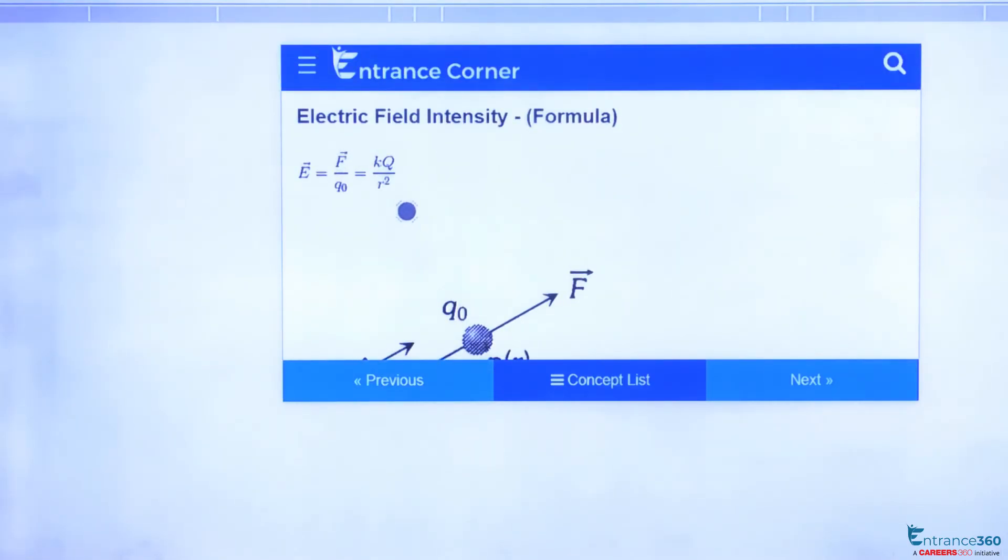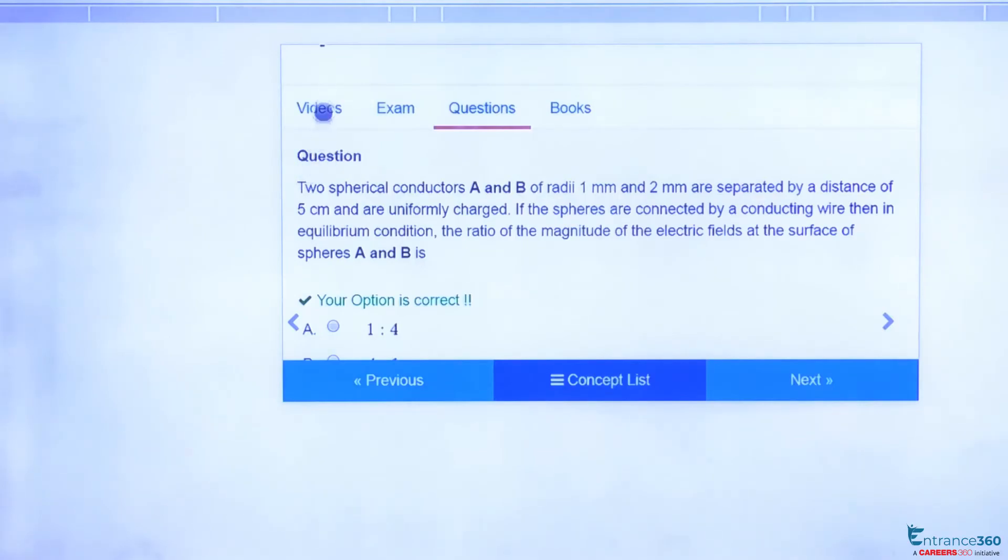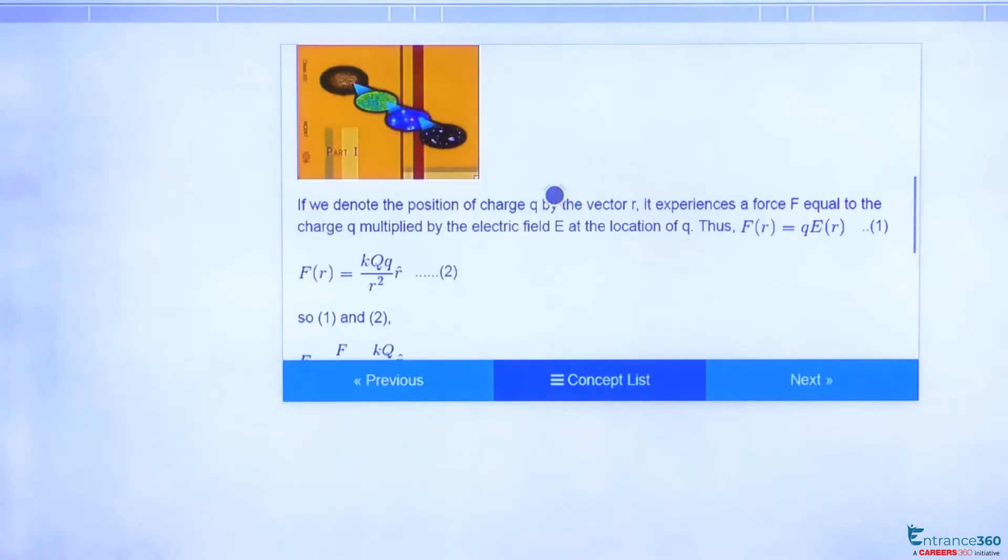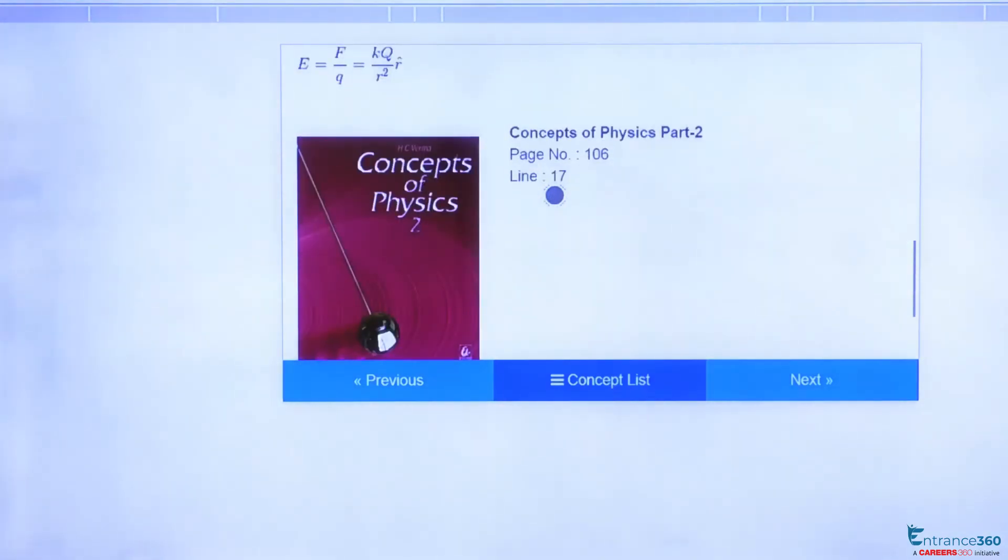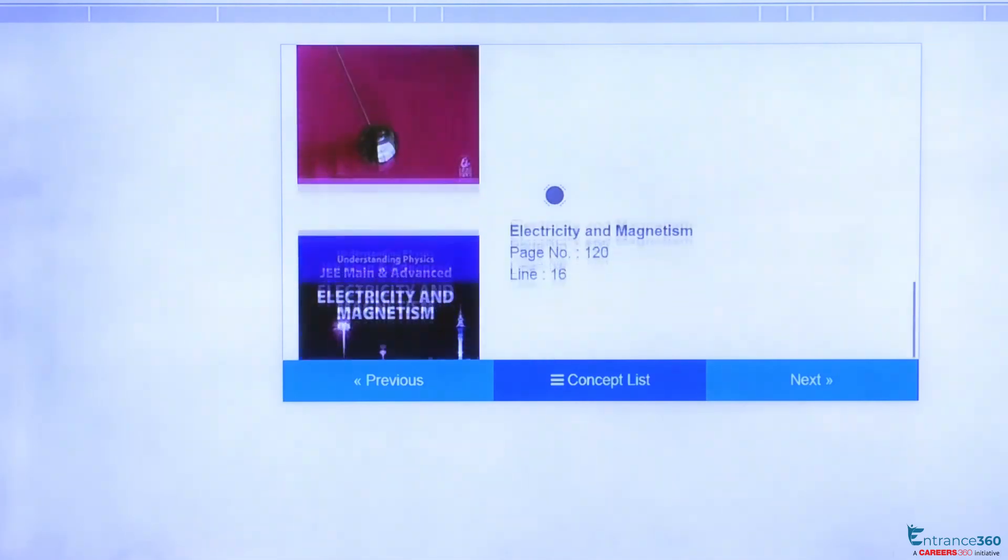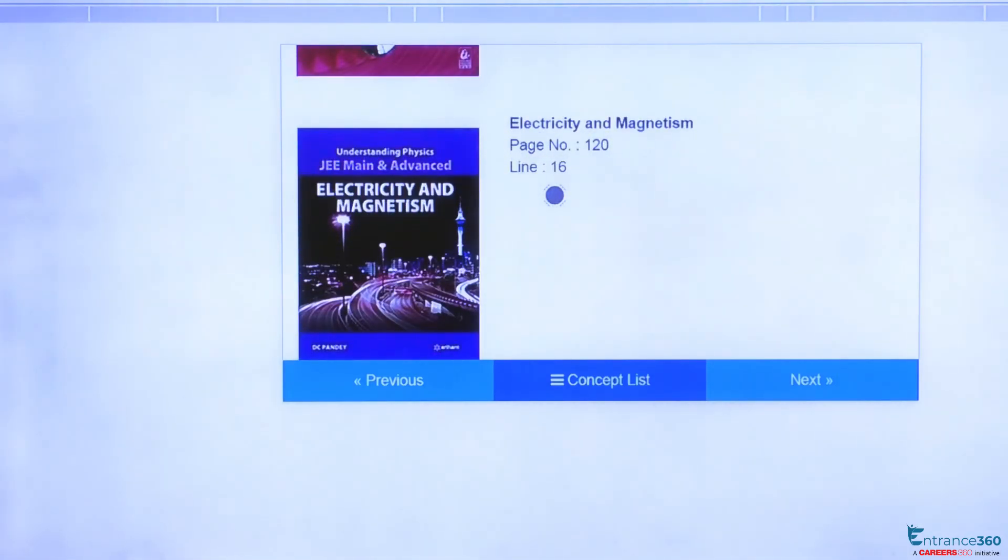that is electric field intensity, you can watch the video here and you can go through the books: NCERT page number 18 line number 23, HC Verma page number 106 line number 17, and Electricity and Magnetism by DC Pandey page number 120 line number 16. Thank you students.